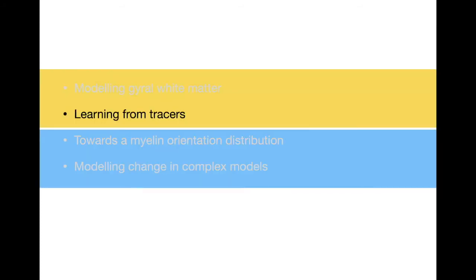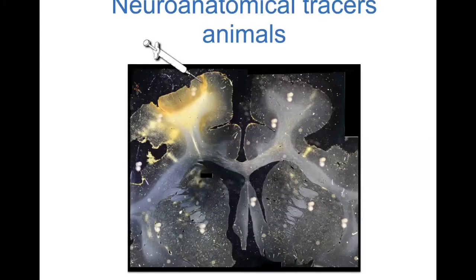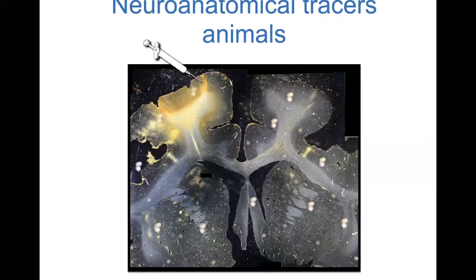The next topic is learning from tracers. This audience is probably familiar with what tracers are — you inject a compound in the brain of an animal and this compound is actively transported inside the axons, giving us ground truth, gold-standard information of connectivity. It's really detailed. For example, using retrograde tracers and looking for cell bodies that connect to the injection site, you can say which cortical layers connect to which cortical layers. You can also have quantitative information — here I'm showing the fraction of labeled neurons from all regions that send axons to V1 in the macaque brain.